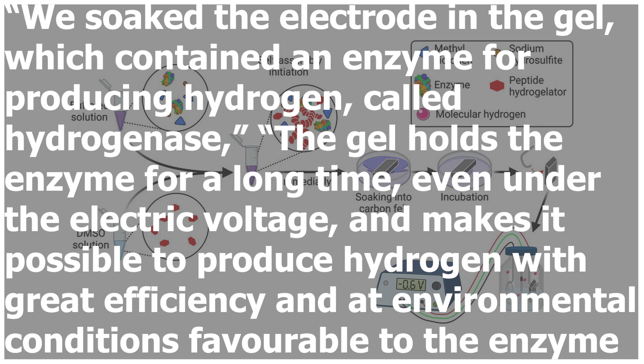One of the researchers explained, we soak the electrode in the gel, which contained an enzyme for producing hydrogen, called hydrogenase. The gel holds the enzyme for a long time, even under the electric voltage, and makes it possible to produce hydrogen with great efficiency and add environmental conditions favorable to the enzyme.